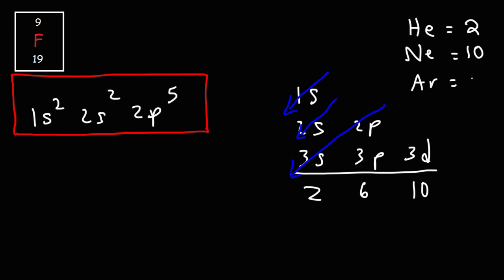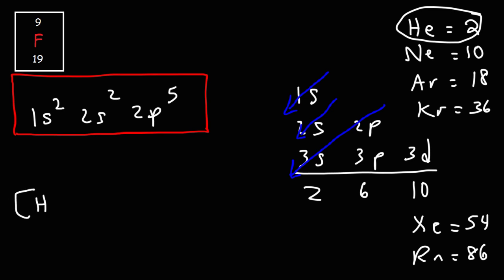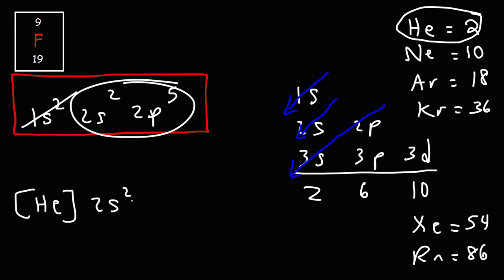Below neon is the noble gas argon, which has an atomic number of 18. Followed by that is krypton at 36, xenon at 54, and radon at 86. We don't need to go past that. We need to select the noble gas with an atomic number just under 9, and the one we'll use is helium. Helium has two electrons, which will replace the 1s2.